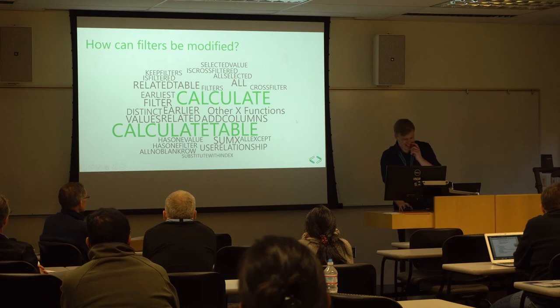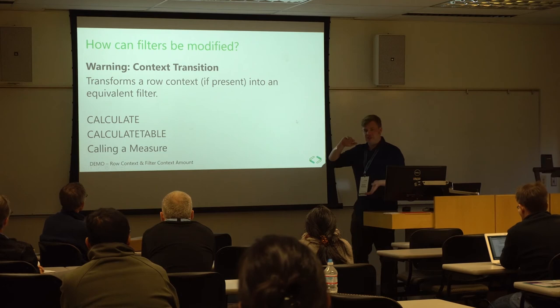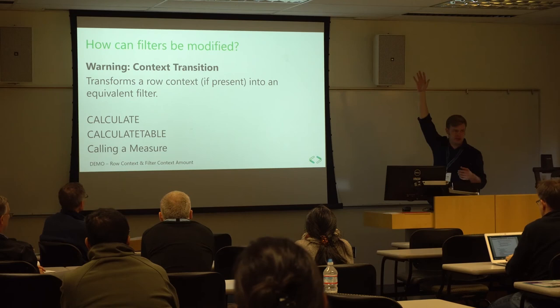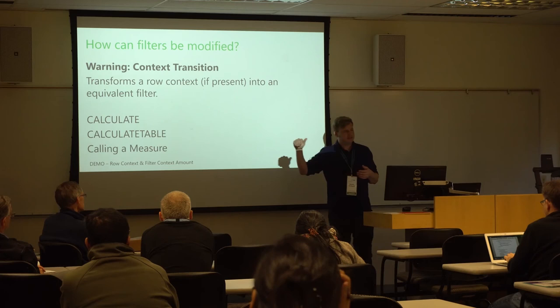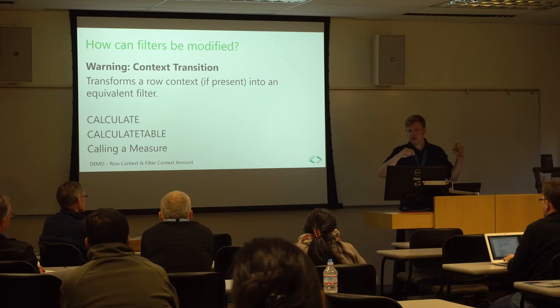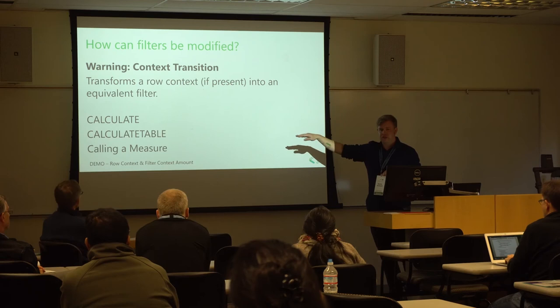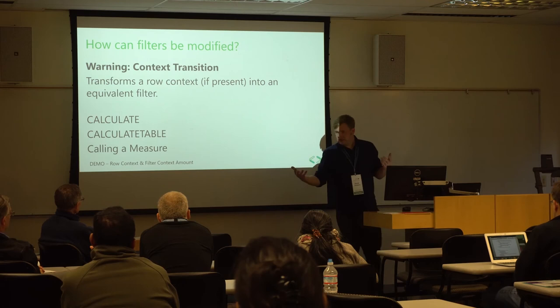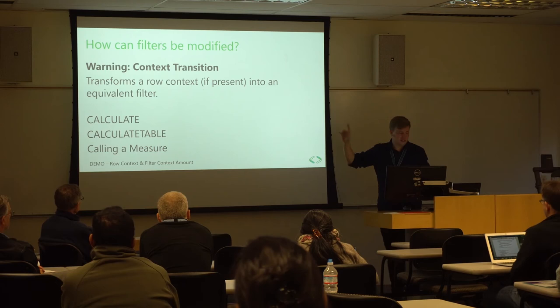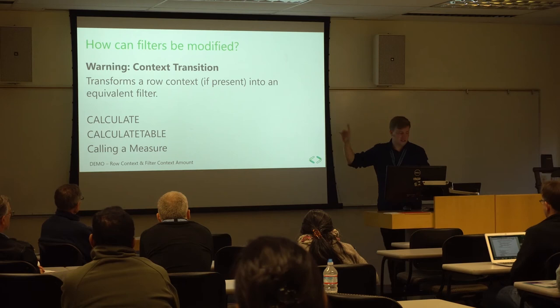The next part talks about when a row context is present. Have you heard about context transition? Context transition is something DAX tries to be smart about. What it does is: if there's a row context present, it takes that row context and applies an equivalent filter context. CALCULATE and CALCULATE TABLE will do that — they'll take a row context if one exists and make an equivalent filter context. The other thing that triggers this is calling another measure, which implicitly wraps a CALCULATE around whatever measure you call.